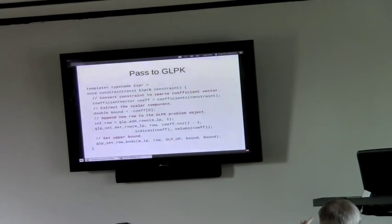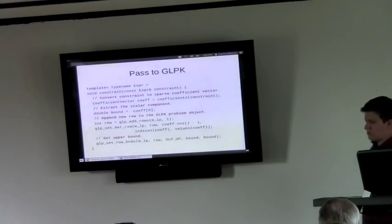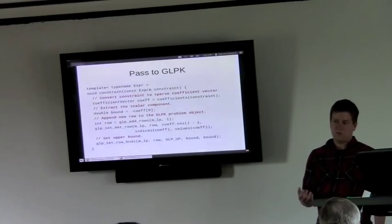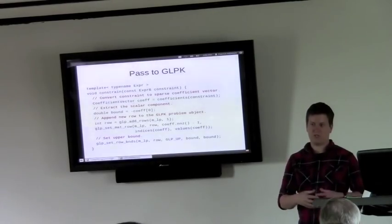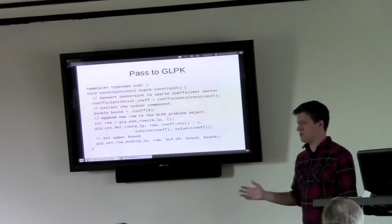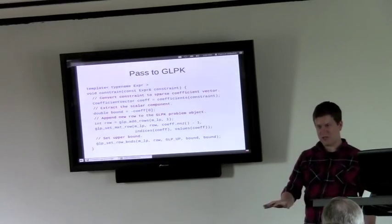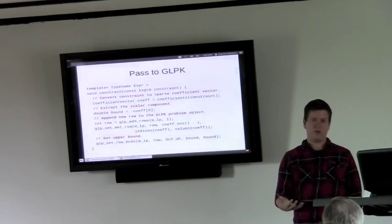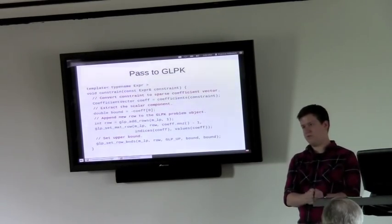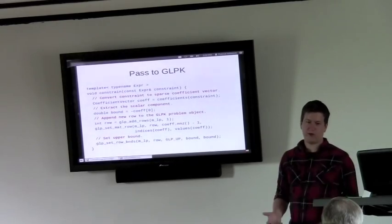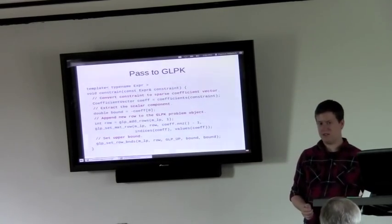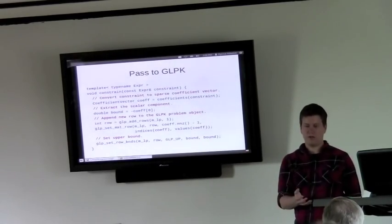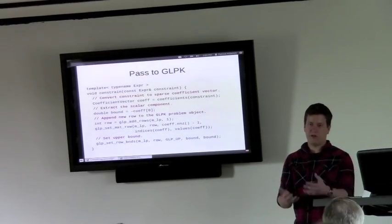So in this constraint function, some arbitrary expression, it does the transform that we just looked at and gets a coefficient vector. The zeroth element is the bound, which goes into B. And then we add a row to the GLPK problem. We set the coefficients. And we set the bounds of the bound that we extracted. So the UBLAS unit vector is a runtime entity? I guess I would have assumed it was runtime.